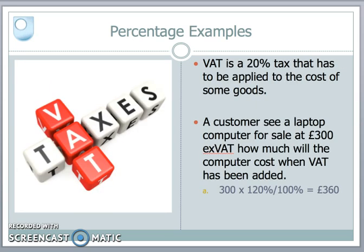When we go shopping we face the dreaded VAT — value added tax — which we add to the cost of goods to get a purchase price. If a customer sees a laptop for sale at £300 excluding VAT, how much will it cost once VAT is added? We calculate this by multiplying the original price by 120 divided by 100 — we divide by 100 to get the unit percentage price, then multiply by 120 because we've added 20% to the original 100%. This gives a purchase price of £360.